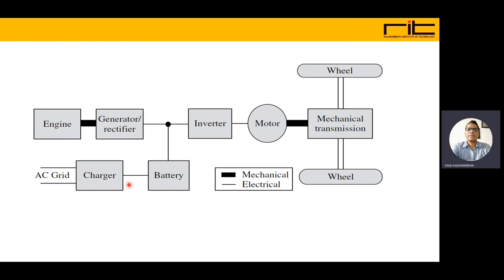In the block diagram, the engine is coupled to the generator and converts mechanical energy to electrical energy, which is then given to the inverter, motor, and transmission. It can also be charged from the grid and is connected to the battery. Whenever required, input can come from the engine to charge the battery. The mechanical coupling is only engine-to-generator and not engine-to-mechanical-transmission — it always goes through the motor in electrical mode. This is the speciality of the series hybrid, that is, the plug-in hybrid electric mode.